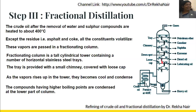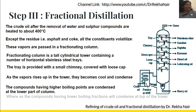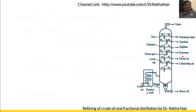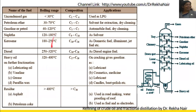Compounds with higher boiling points condense at the lower part of the column, while those with lower boiling points condense and separate at the upper part of the tower. Now let us discuss the products — what fractions we get and at what boiling range.